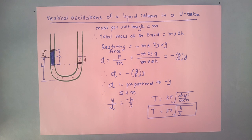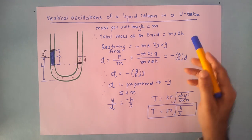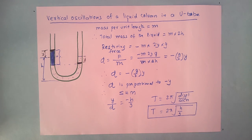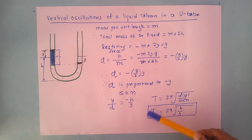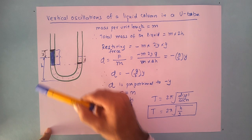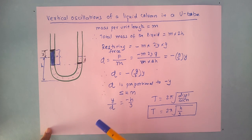In this video we have proved that vertical oscillations of a liquid column in a U-tube are simple harmonic in nature, and the time period of those oscillations depends upon the height of the liquid column. Thank you.